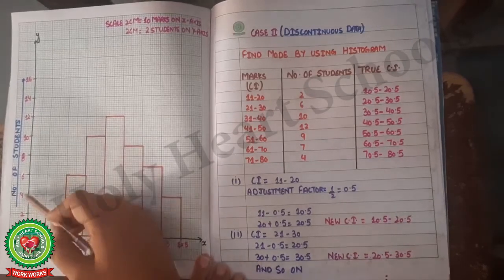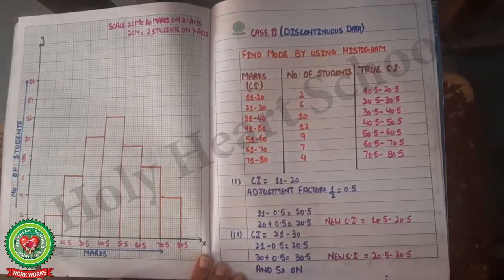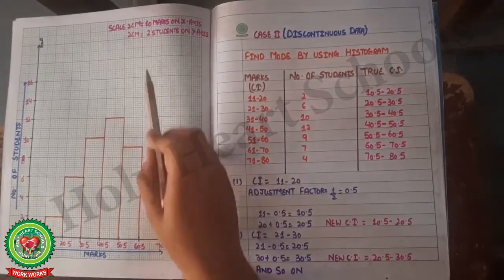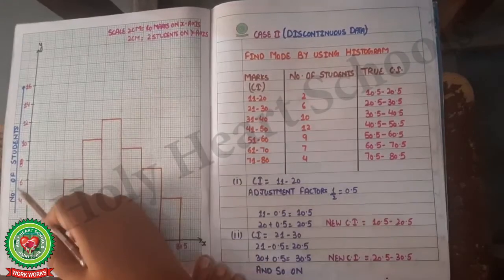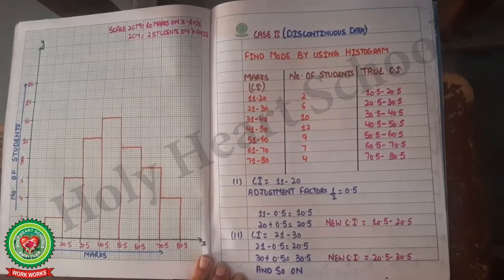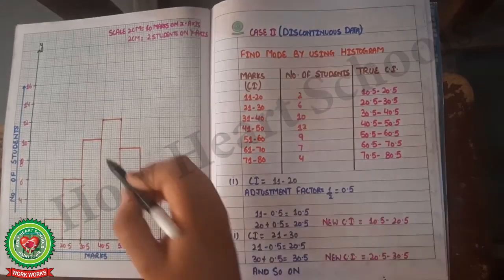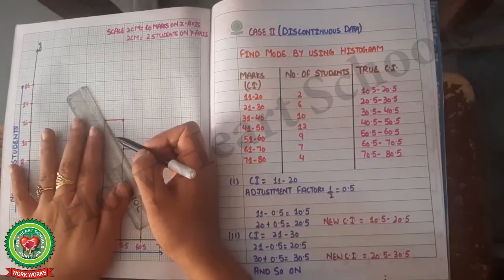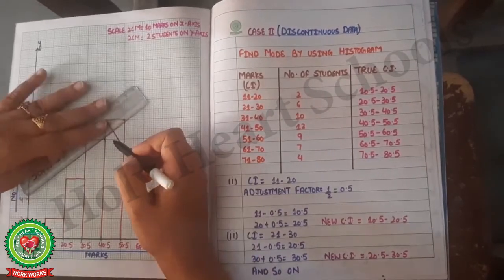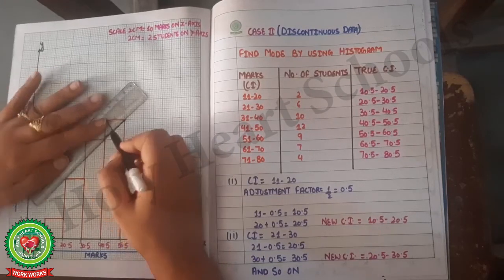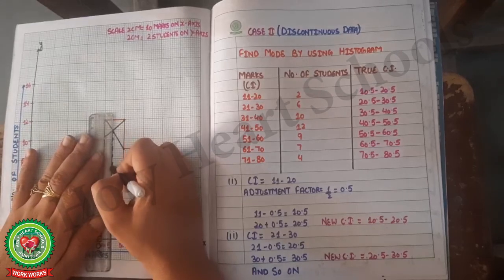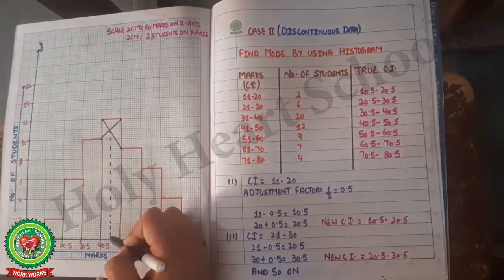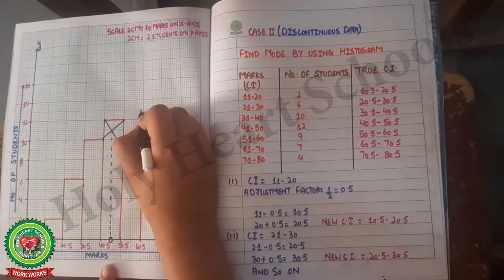On the y-axis we write the frequency (number of students). The scale is 2 cm = 10 marks on the x-axis and 2 cm = 2 students on the y-axis. We draw the histogram using the same process as before. Then we mark dots on the top corners of the highest bar and its neighboring bars, join them in a cross pattern, and draw a vertical line down from the intersection.